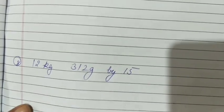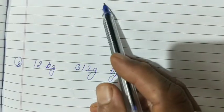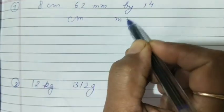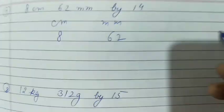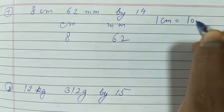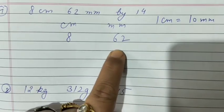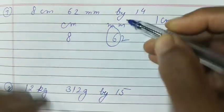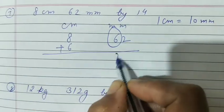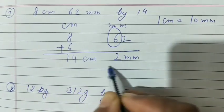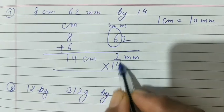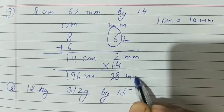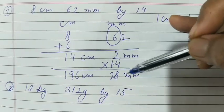Question number 7. We have given 8 centimeter, 62 millimeter by 40. We have given centimeter, millimeter 8, 62. In 1 centimeter, how many millimeters? 10 millimeters. That means here 1 digit should be there. But there are 2 digits. So here 6 will be centimeter. You will add 6 here. It will become 2 millimeter, 14 centimeter. Now multiply by 14. 14 times 2 is 28. 14 times 14 is 196. So answer will be 196 centimeter, 28 millimeter.